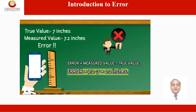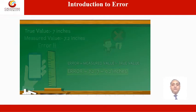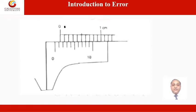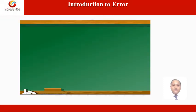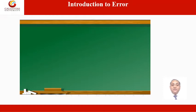Consider another example: a Vernier caliper, where the zero mark of the Vernier scale may not coincide with the zero mark of the main scale, causing an error. There are many other examples where a difference exists between the measured value and the actual value, giving us an idea of error.